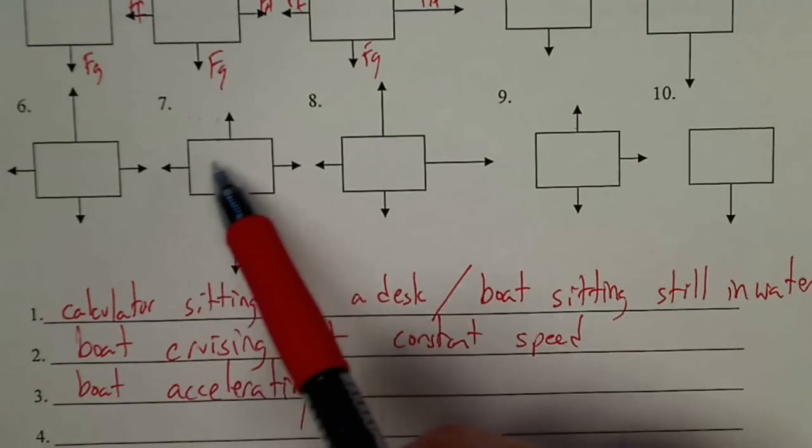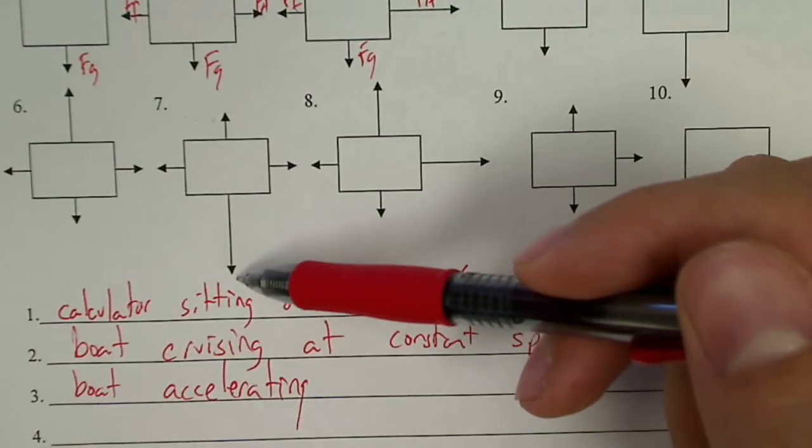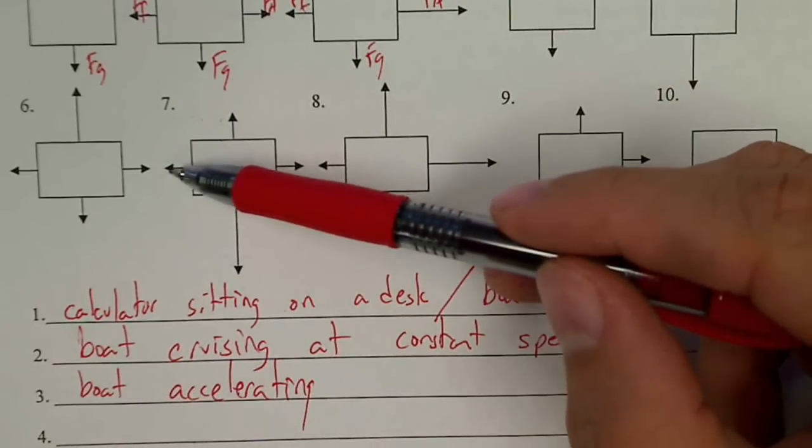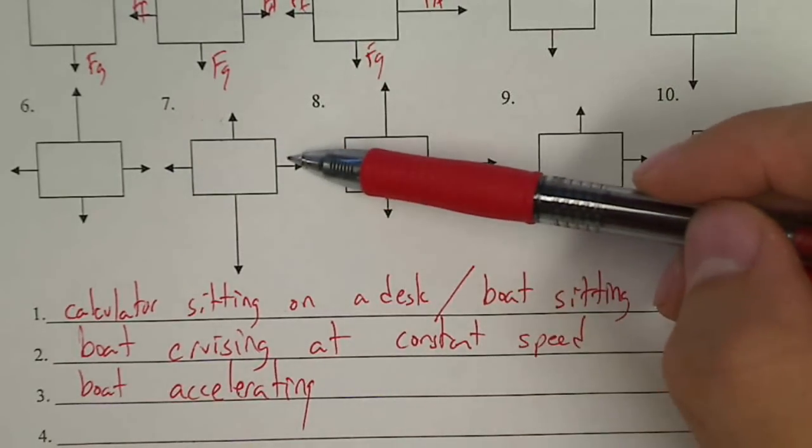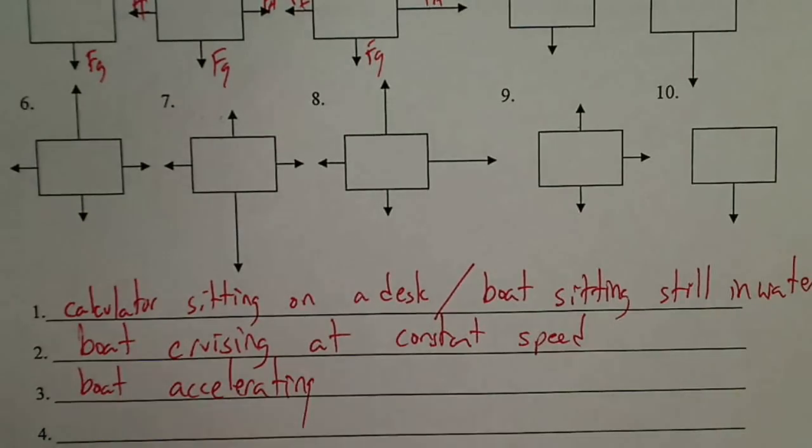Whereas here, number seven, constant velocity left and right, accelerating down. So this might be a plane that's cruising through the air, but is accelerating down to a lower altitude.